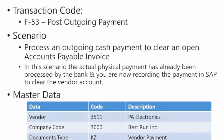Now that we've learned how to enter different types of invoices and how to run vendor line item reports and age analysis reports, let's have a look at processing a manual payment as our first payment option. In SAP the transaction code is F-53, or Post Outgoing Payment. The scenario here is we'll post an outgoing payment to clear an open accounts payable invoice. An actual physical payment has already been processed by the bank — the cash has already gone out of your account — but we now want to record that payment in SAP to clear the vendor account.